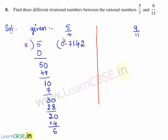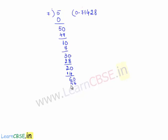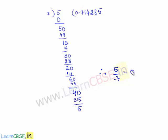The remainder is 6. Because of the decimal point, 6 becomes 60. 7 goes into 60 eight times. 7 times 8 is 56. Now we have the remainder 4. Since we have the decimal point, 4 becomes 40 and 7 goes into 40 five times. 7 times 5 is 35 and the remainder is 5. From here the remainders repeat themselves. Therefore, the decimal expansion of 5 by 7 is equal to 0.714285 bar.